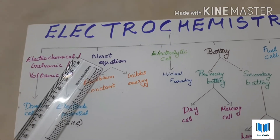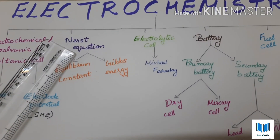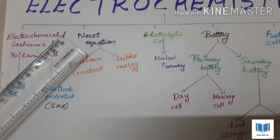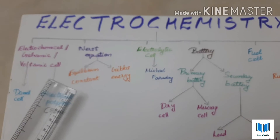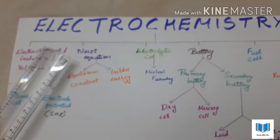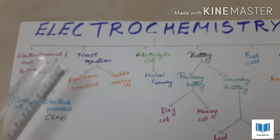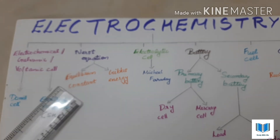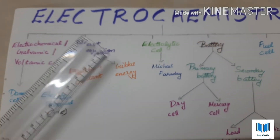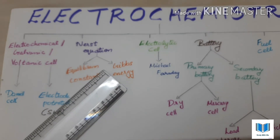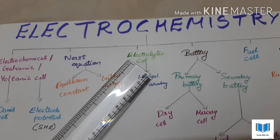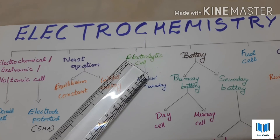Next topic is the Nernst equation, which is very important. The Nernst equation has a small derivation. Under the Nernst equation, we have the equilibrium Nernst equation in context with the equilibrium constant, and the Nernst equation relationship with Gibbs energy.